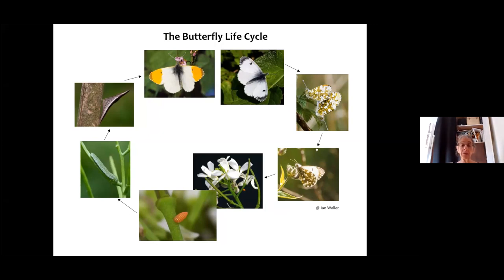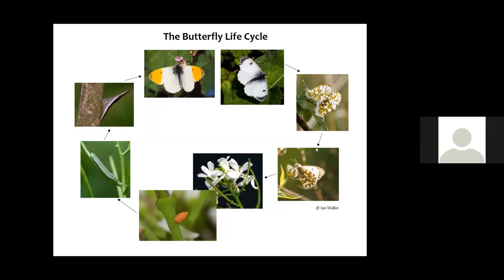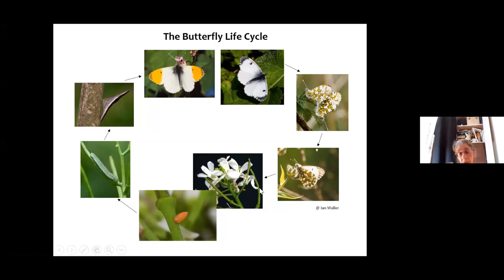I'm sure everybody remembers the butterfly life cycle. We've got orange-tip butterflies here as an example. They mate, the female lays eggs — in this case on cuckoo flower — and you can see the tiny egg. You can actually look for these on their various food plants. The caterpillar hatches out, eventually it pupates, and then the next year — because they only have one generation a year — it emerges as a butterfly.